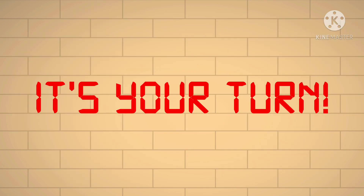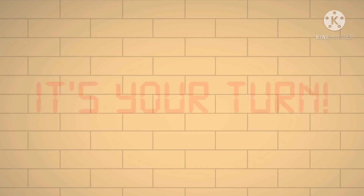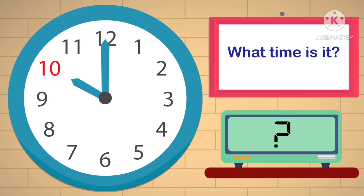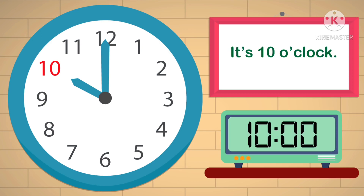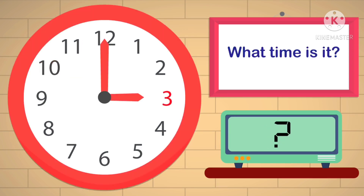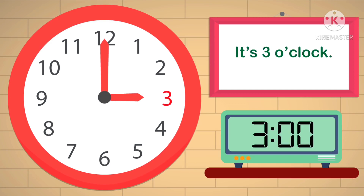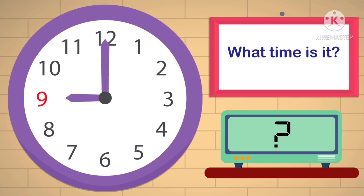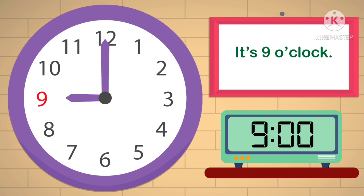Now it is your turn children. Come on, tell me what is the time? Yes, it is 10 o'clock. Now, can you tell me the time? Yes, it is 3 o'clock. The hour hand is at 9 and the minute hand is at 12. So the time is 9 o'clock.